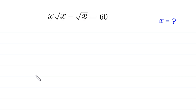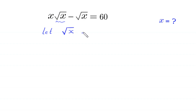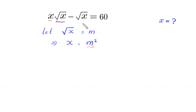Welcome. We need to solve the algebra equation x times square root of x minus square root of x equals 60, finding all possible values of x. We suppose that square root of x equals m, and squaring both sides gives x equals m squared. We replace x with m squared and each square root of x with m.